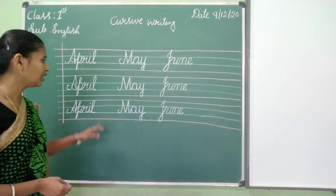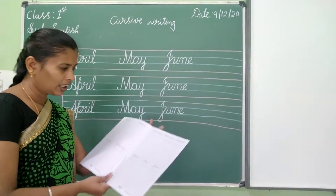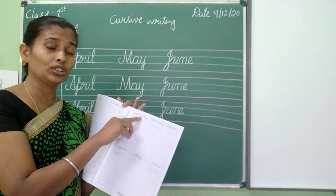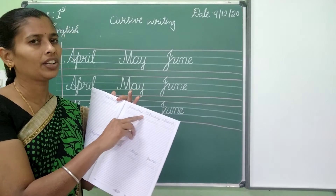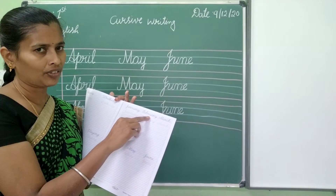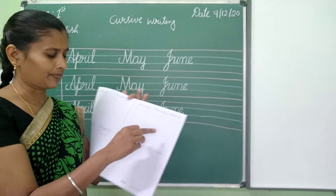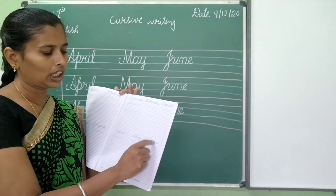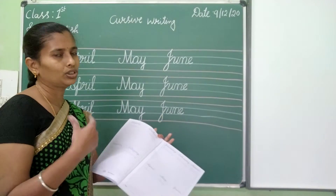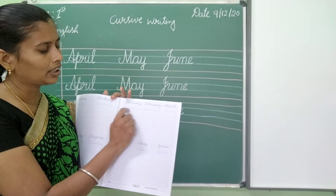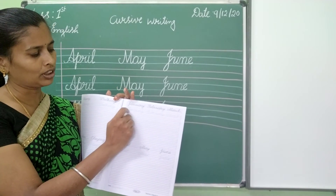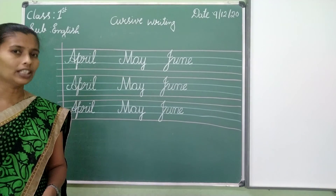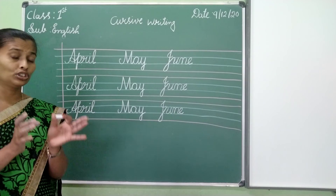Okay, children. You have to write like this. In page number 27, you have 6 months' names. January: J, A, N, U, A, R, Y. February: F, E, B, R, U, A, R, Y. March: M, A, R, C, H. April: A, P, R, I, L. May: M, A, Y. June: J, U, N, E. While you're writing, you should pronounce each letter and each word. First you should trace, afterwards write neatly on the line. Your handwriting should be neat. Take your own time. Thank you.